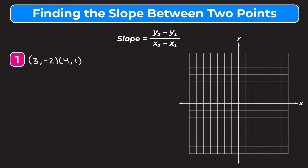In this video we're learning how to find the slope between two points. At the top of our screen we see this equation that says slope is equal to y2 minus y1 over x2 minus x1.